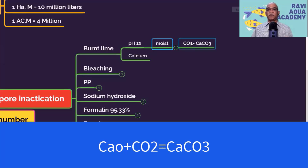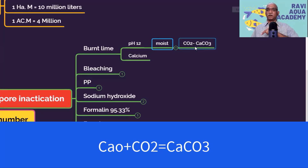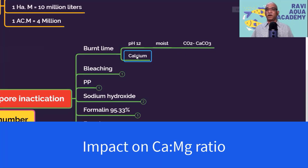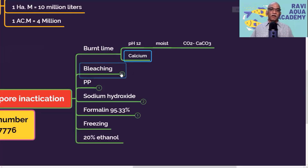After that, due to reaction with carbon dioxide, it becomes calcium carbonate and the pH comes down. One disadvantage is that most shrimp farmers, especially in Andhra Pradesh, use inland bore water where calcium levels are high and magnesium levels are low — there is no proper calcium-to-magnesium ratio. Adding calcium in the form of burnt lime can raise calcium levels further and may lead to moulting problems.